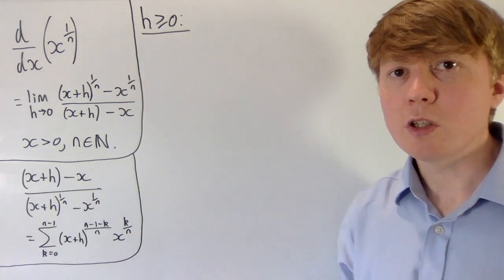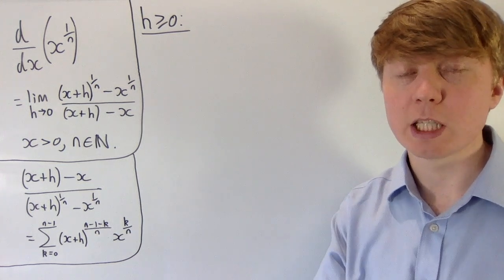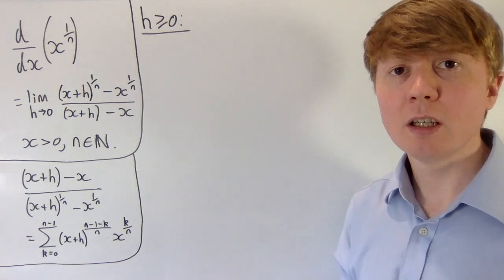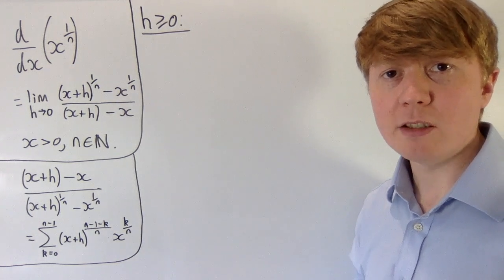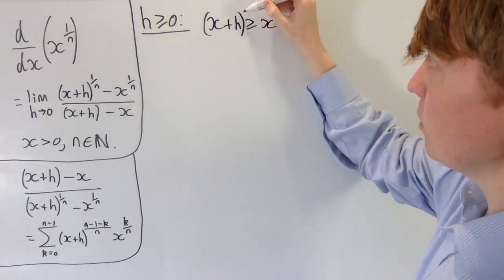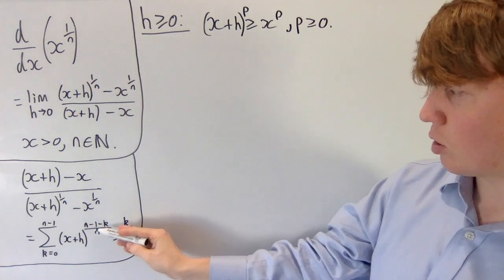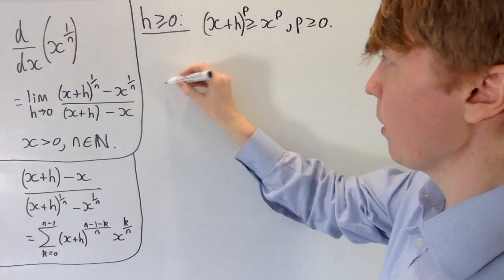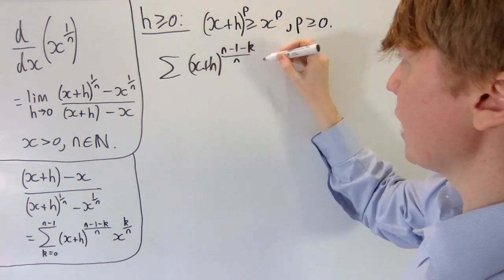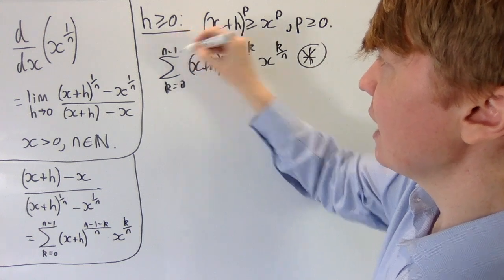We're going to split into two cases depending on if h is positive or negative. If we only consider positive h, you would just get the right derivative, and similarly if h is negative, you would just get the left derivative, so we need both cases to fully have the derivative of this function. Starting when h is greater than or equal to 0, this tells us that x plus h is greater than or equal to x, and for any positive power p, x plus h to the p is greater than or equal to x to the p. All of the terms in our sum have positive powers, so rewriting the sum, we've got the sum of x plus h to the power of n minus 1 minus k all over n, times x to the k over n — going from k equals 0 to n minus 1.